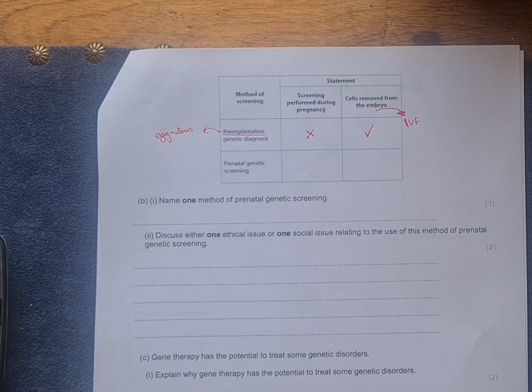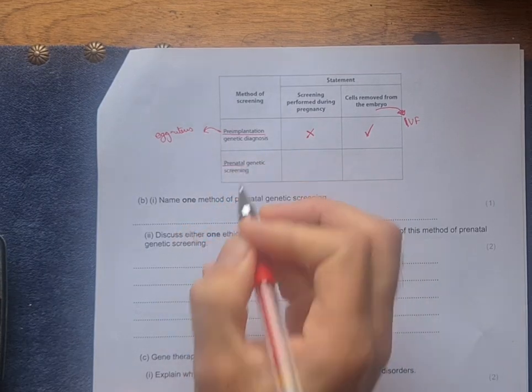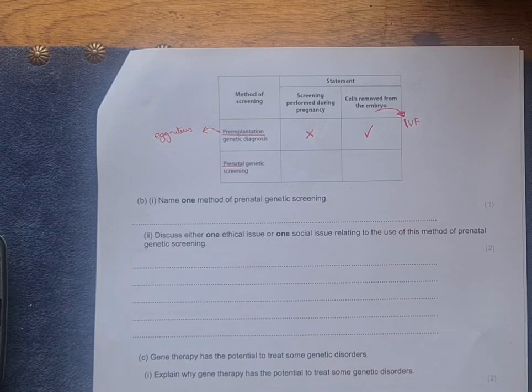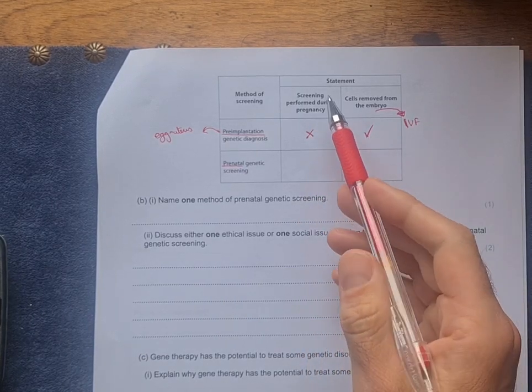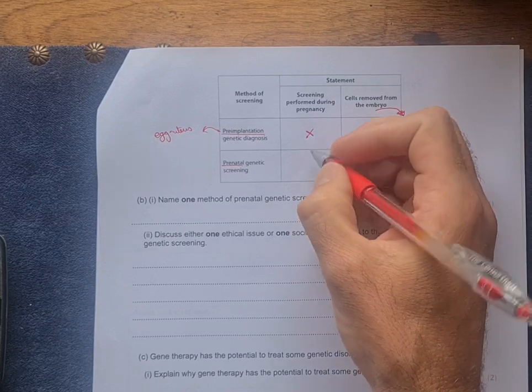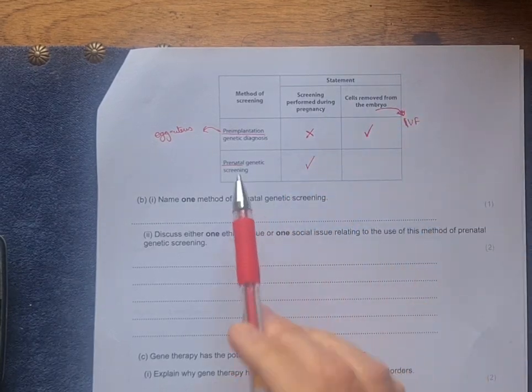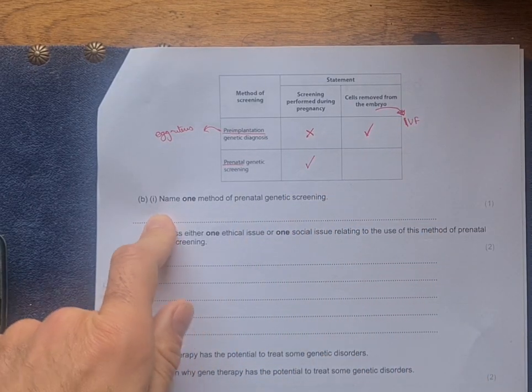So that's that one there. Then you have prenatal, which is before birth. And so you do have the screening performed during pregnancy. And you have two types, which is your answer here.